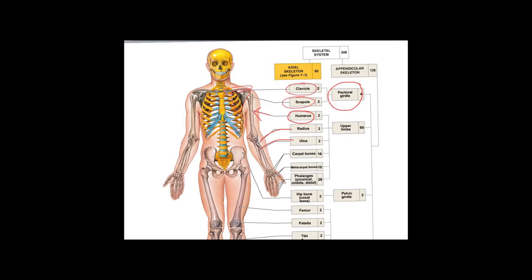The radius is the bone on your thumb side, and the ulna is the bone on your pinky side. A memory trick: stick up your thumb like the Fonz and say 'radical' — that's rad, radius. And ulna starts with U — pinky-ulna, P-U. You always have to know which side the radius is on and which side the ulna is on.